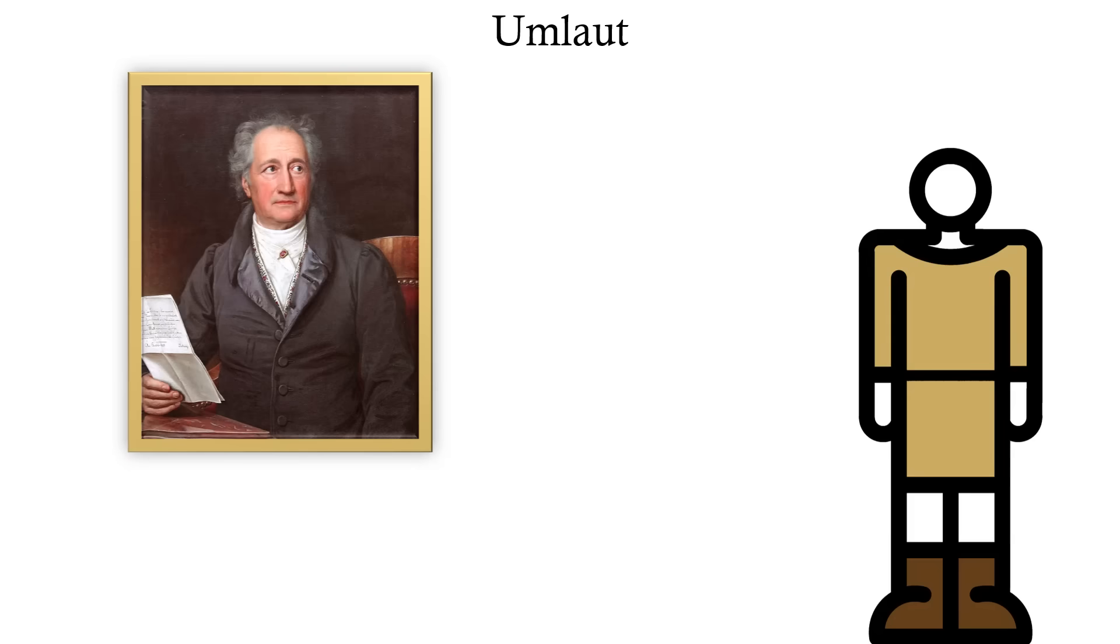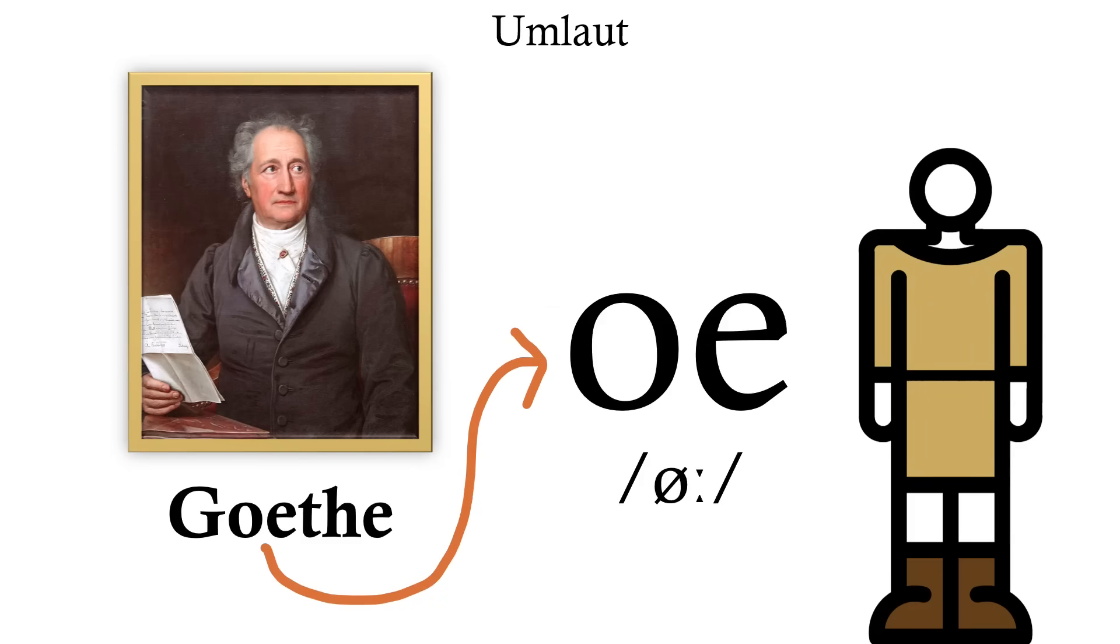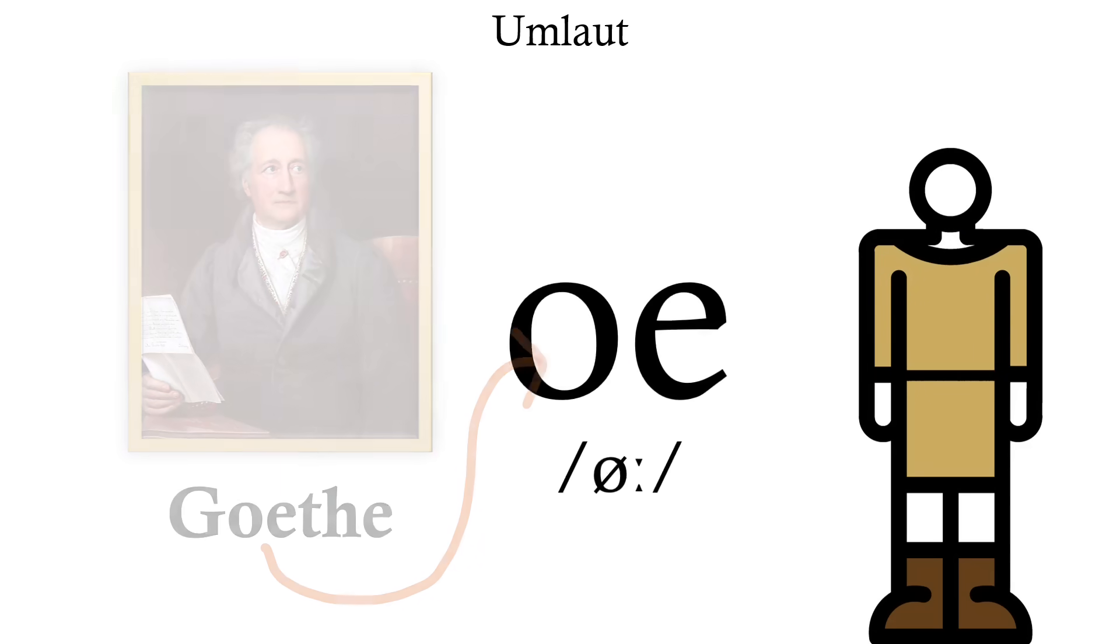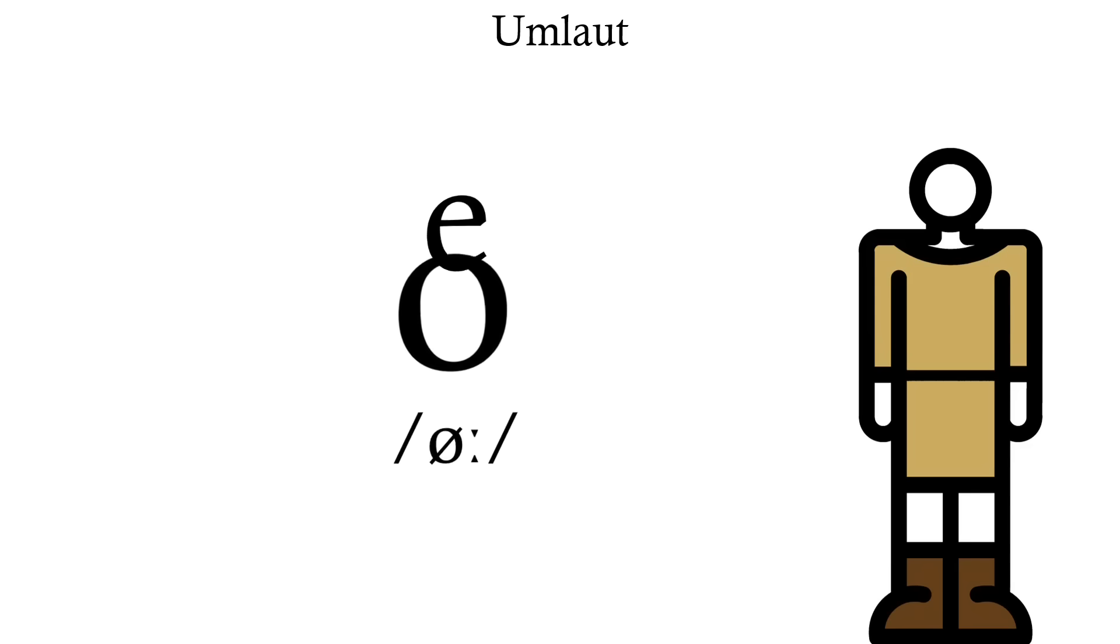So when we look at old names like Goethe, we see that the OE digraph here represents that sound. Then they put that E in superscript on top of that O. Elegant, isn't it?